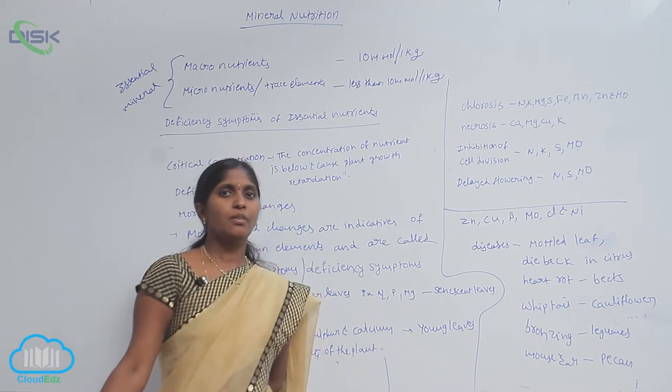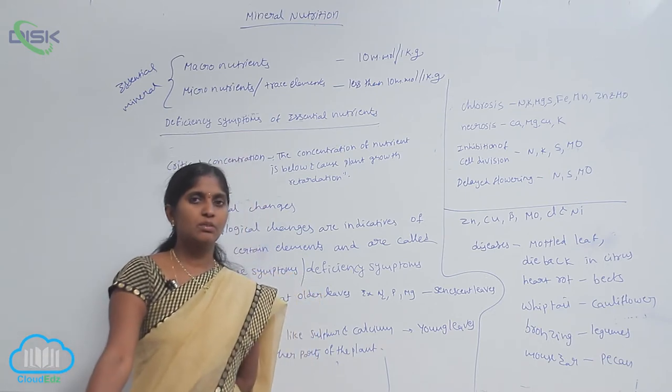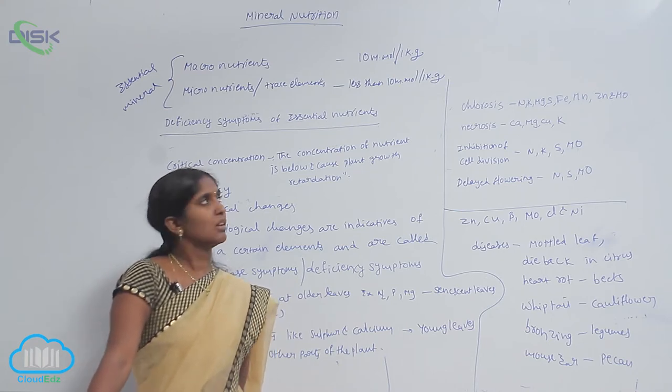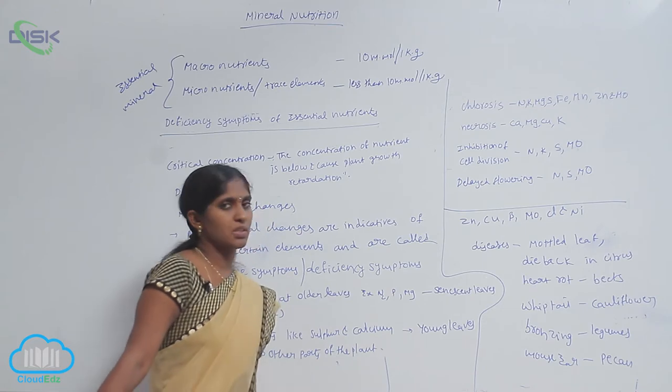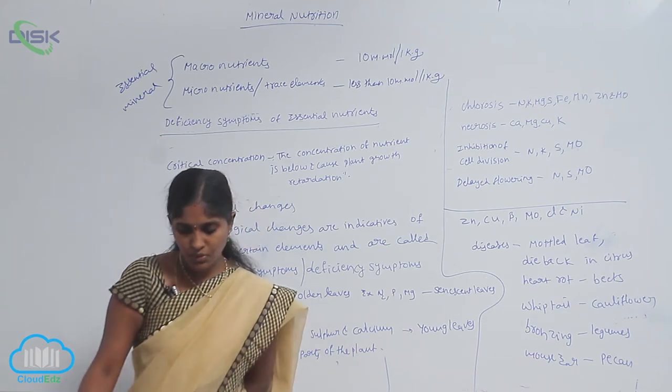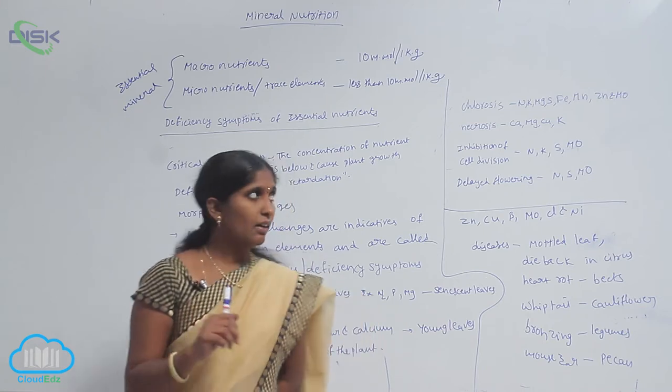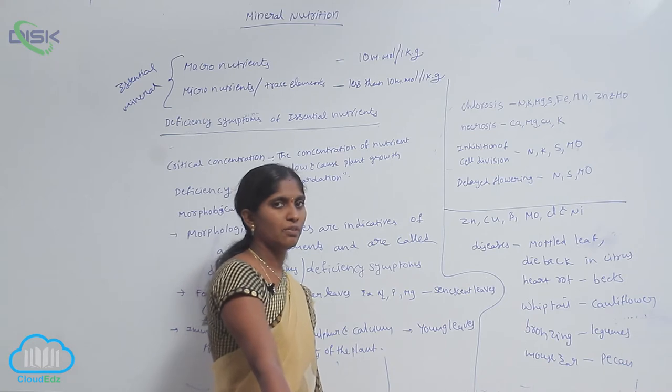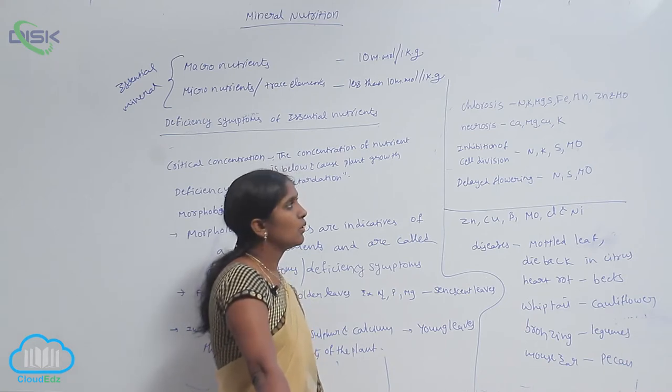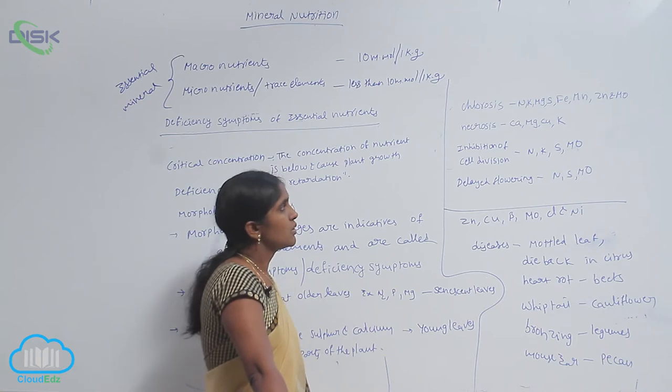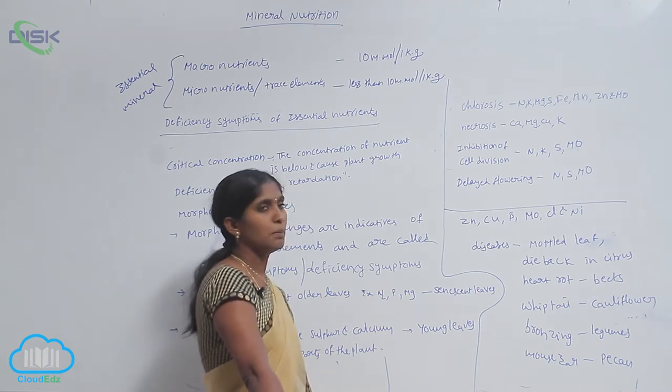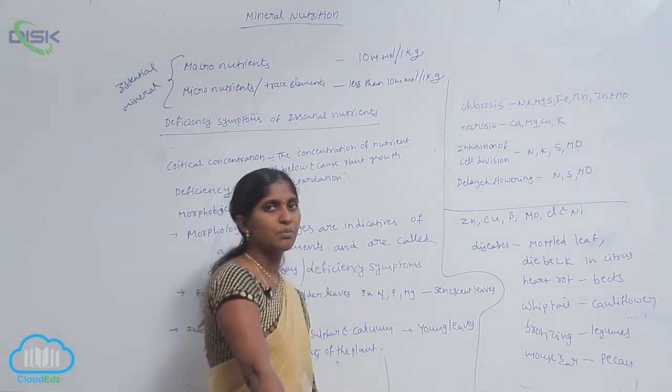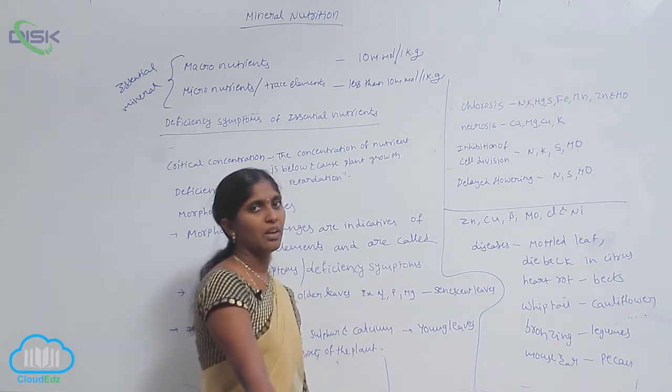But to identify that, we need the knowledge about the nutrients and their disease symptoms. And next is necrosis. Necrosis is death of tissue, especially the tissue of leaves. That is caused by many elements deficiency like calcium, magnesium, copper, and potassium.